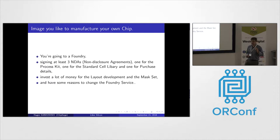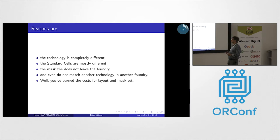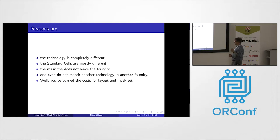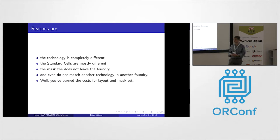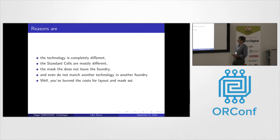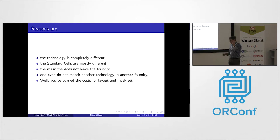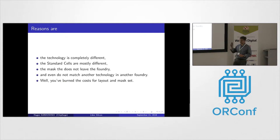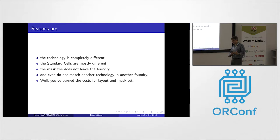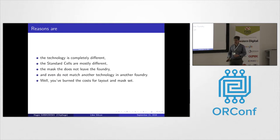So if there's a reason to change the foundry, all the money you've invested is gone. The technology for the next foundry you choose is completely different — you can't compare one technology with another. The standard cells are mostly different. And even if you had the possibility to take your mask out of the first foundry, you can't bring it to the next one and say 'make my chip.' It doesn't work. So that's a big issue. You burned money, money, money.